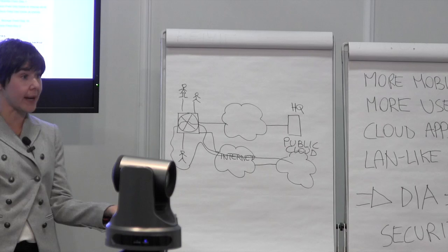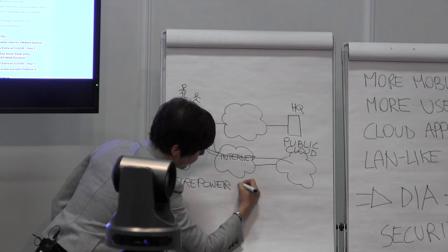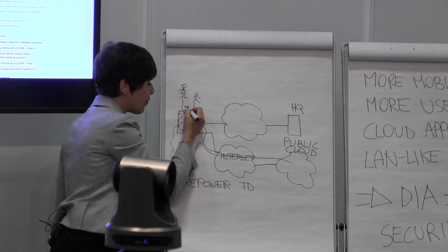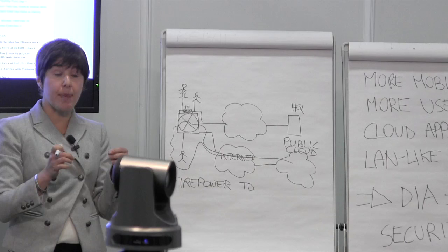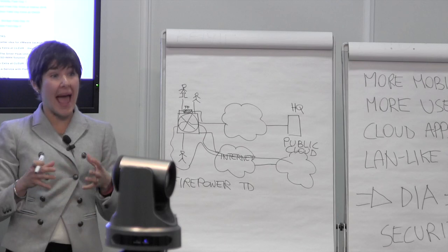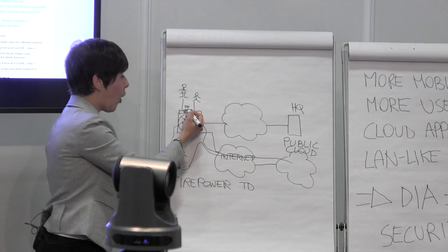That's where we recommend the Firepower threat defense solution, which runs on a UCS-E blade — a compute blade you can add to your router. You can run virtualization on top of it and then run a Firepower virtual instance. It's really like having an appliance sitting in your branch, but you don't — you still save that square footage, you're not adding a new device, yet you have all the capabilities that Firepower provides.